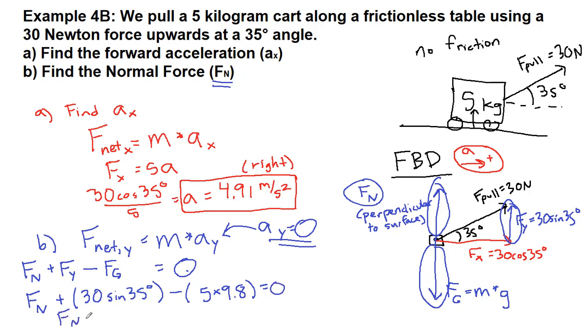Okay, so we have the normal force plus 17.2 minus 49 equals zero. And so the normal force when we solve for it is going to equal 49 minus 17.2 which equals 31.8 newtons. Now notice in the very first full example from chapter four, the normal force is not equal to gravity.